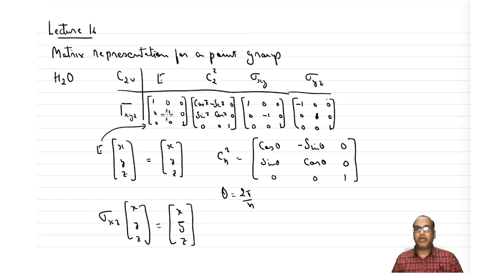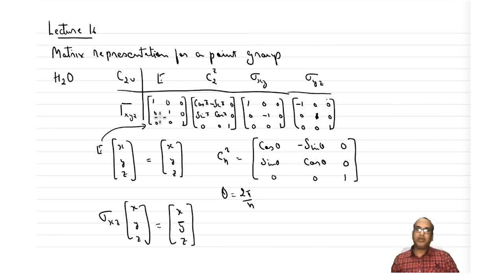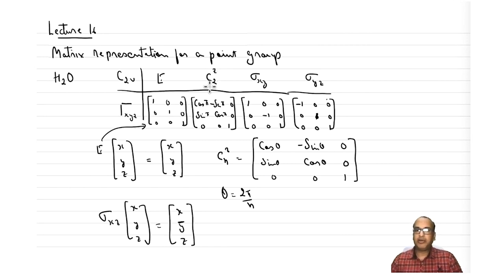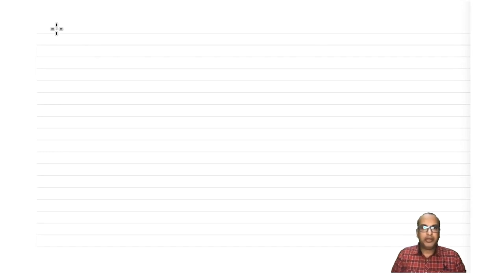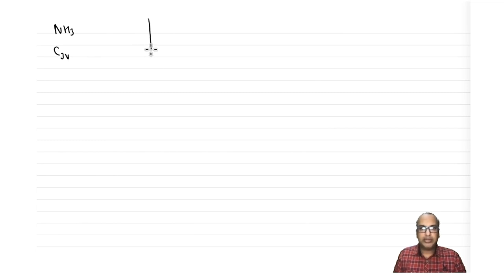This is a very straightforward way of writing a matrix representation using an orthogonal coordinate system as the basis set, and fortunately our symmetry operations lie along those axes. Now let us look at an example of NH3, which belongs to the C3v point group.